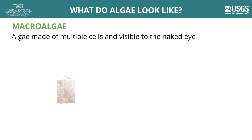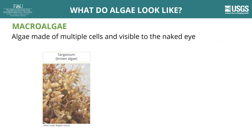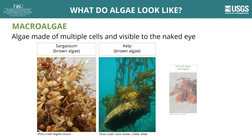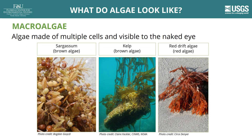Other types of algae are made of multiple cells and can be seen with the naked eye. These are called macroalgae and include seaweed like kelp. Kelp is a type of brown algae that grows on the west coast of the United States and can grow as tall as a 20-story building under the water.